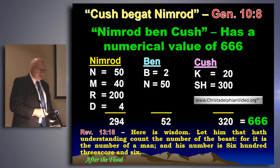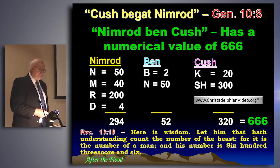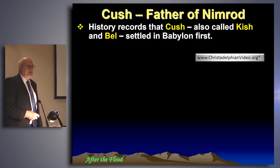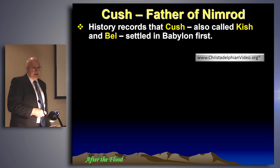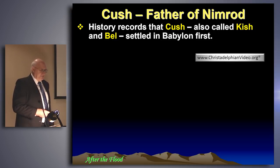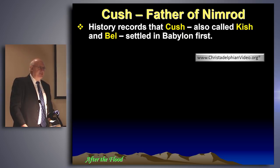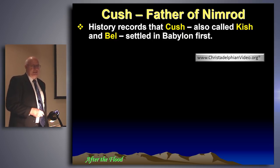You can see that the relationship of Nimrod to Babylon the Great of the latter days is quite plain. But what about Cush? He doesn't get quite the airplay that Nimrod gets, but he's probably in some ways even more important. History records that Cush was also called Kish and Bel. He was the one who settled in Babylon first — the great original prophet of the Babylonian mysteries. In other words, he actually invented the basics of the Catholic catechism.